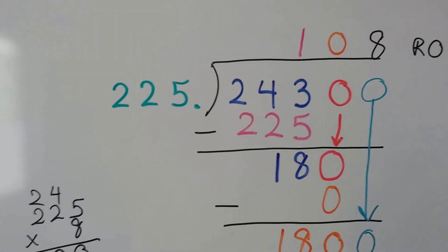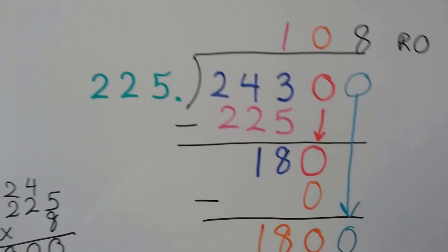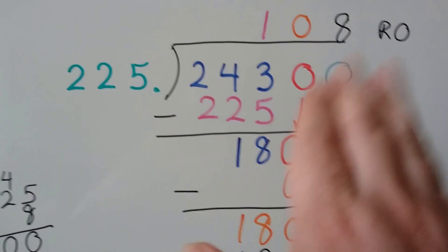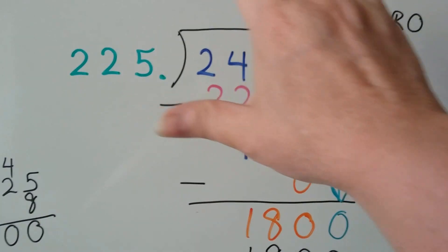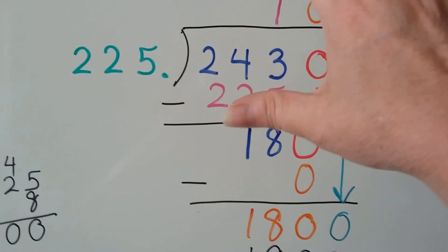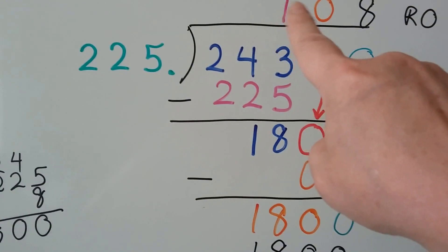So what we did was, we asked ourselves, how many times could this 225 fit into 243? It can't fit into 2, it can't fit into 24, but it can fit into 243 one time.